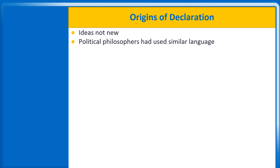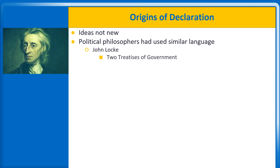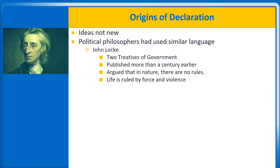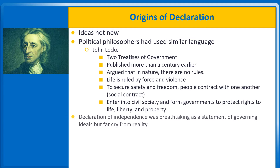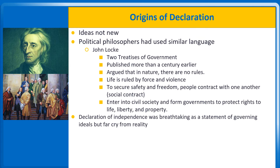These ideas were not new. Political philosophers, especially the English thinker John Locke, had used similar language. In his Two Treatises of Government, published more than a century earlier, Locke argued that in nature there are no rules and life is governed by force and violence. To secure safety and freedom, people contract with one another, enter into civil society, and form governments to protect one another's life, liberty, and property.